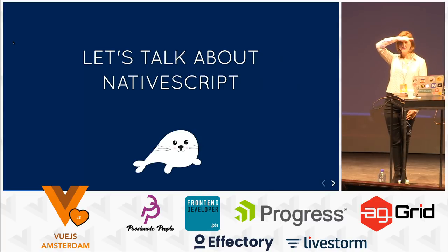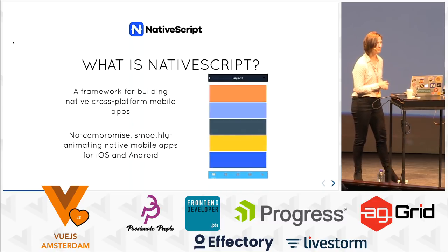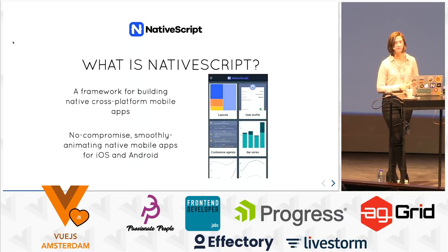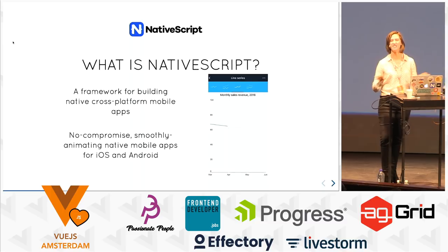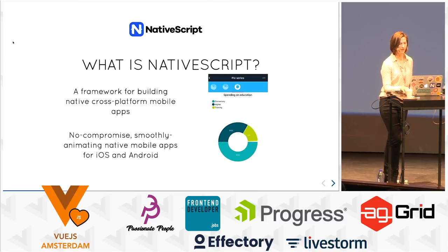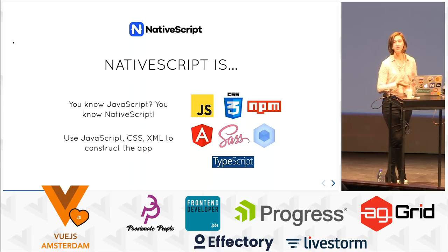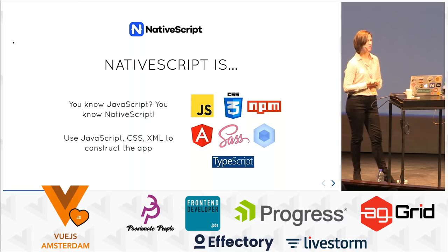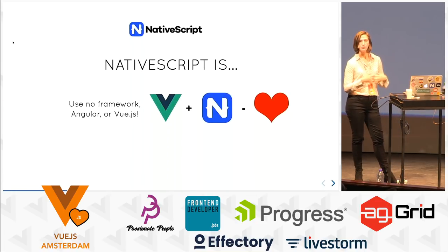Let's talk about NativeScript. Mobile developers, make some noise! Because I had a feeling that might happen, I threw a couple of slides in to explain what NativeScript is. NativeScript is a framework for building native cross-platform mobile apps. Since it is a native app, you're getting what we like to call buttery smooth animations for iOS and Android. You can download an app called Examples NativeScript in both app stores and check it out. A lot of people say, 'NativeScript — do I have to learn another language?' No, it's just JavaScript. You're going to use JavaScript, CSS, and XML to construct the app.